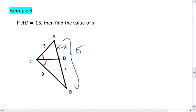Since we have an angle bisector, we can set this as a proportion. We get that 13 over 15 minus X equals 8 over X.